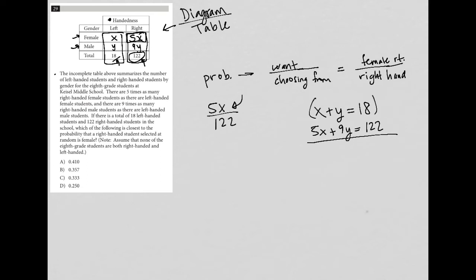So I'm going to multiply this top equation by negative 9. In fact, I'm going to change my mind on that. Instead of using the elimination method, I'm going to use substitution. So to use substitution, and because I only want to solve for X, I'm going to take this X plus Y equals 18, subtract X from both sides, and I'm left with Y equals 18 minus X.